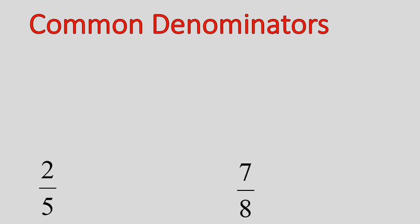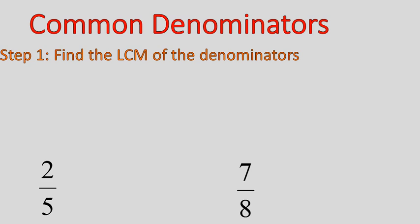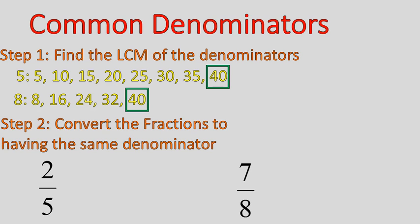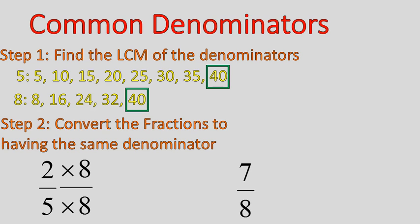We're going to change fractions to having the same denominator, and then just add the numerator. Let's move on to finding common denominators. The steps are as follows: first, you find the least common multiple of the denominators — the number on the bottom. I list the multiples of 5, I list the multiples of 8, and I find the lowest common multiple between them. Then I convert the fractions. I look at the denominator of 5 in the fraction 2 out of 5: 5 times 8 gives me 40, so I multiply the top and bottom times 8, giving me 16 out of 40.